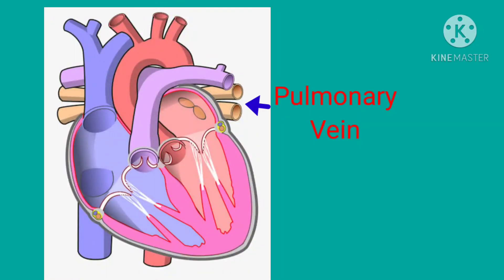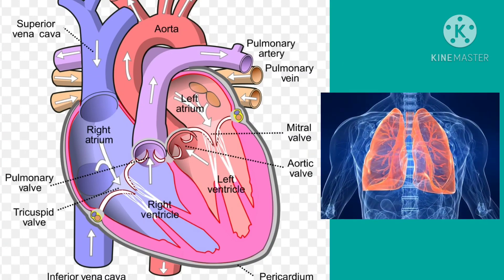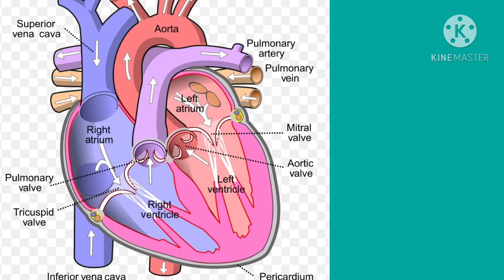Fourth, the pulmonary vein. As you know, veins carry deoxygenated blood, but the pulmonary vein carries oxygenated blood from the lungs to the left atrium of the heart.